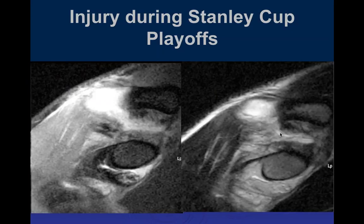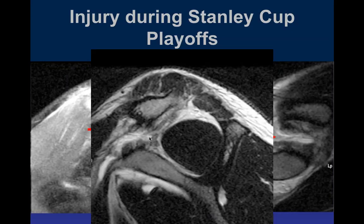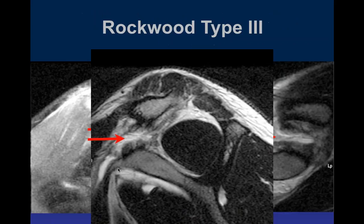On the coronal fat-sat and T2 sagittal images, there's signal within the mid-substance of the CC ligament going across, indicating a CC ligament tear. There's not much elevation or displacement of the CC interval. Another image confirms it is torn, making this a Type 3.